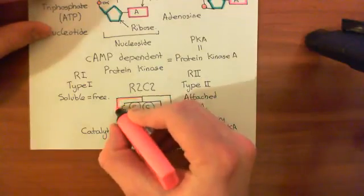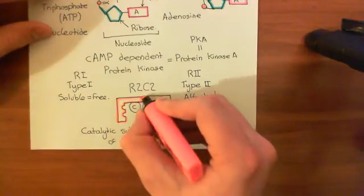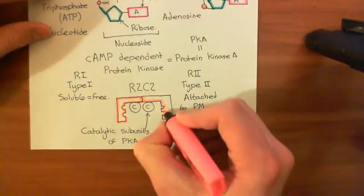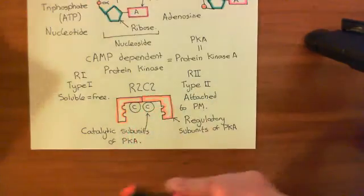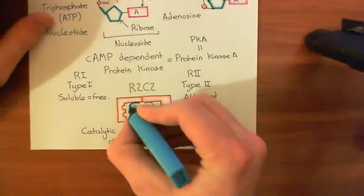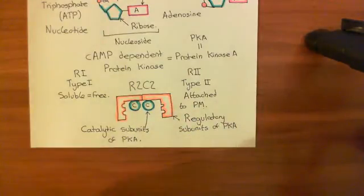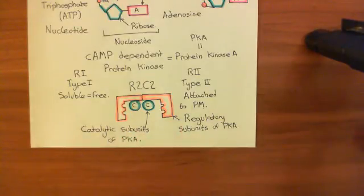So in this picture: in red, this is the regulatory subunit — it can either be a type 1 regulatory subunit, giving you a type 1 protein kinase A, or a type 2 regulatory subunit, giving you type 2 protein kinase A. Whichever regulatory subunit you use, you end up with the same catalytic subunits — drawn in blue. These catalytic subunits are the same no matter what, but they are inhibited when they bind to the regulatory subunits. So in order to activate them, you need to break them away from their regulatory subunits.